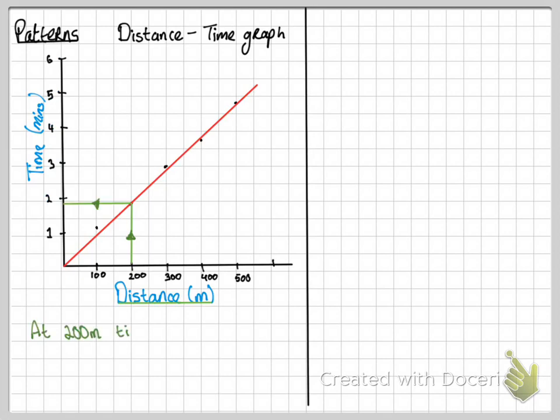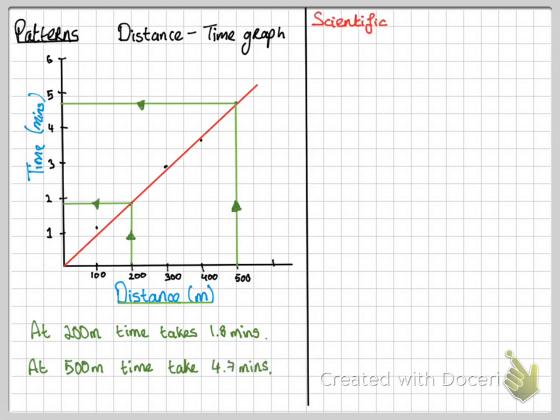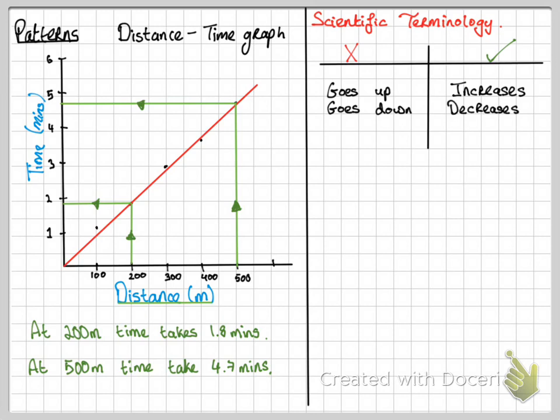I've included some key scientific terms that I want you to be aware of. So the x represents words that we should not use, and the tick represents words we should use. So 'goes up' is not very scientific. Instead we should use words like increase. 'Goes down,' again not very scientific, we should use the word decrease. And 'stays the same,' instead we should use the word constant.